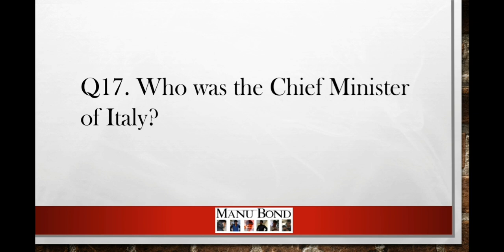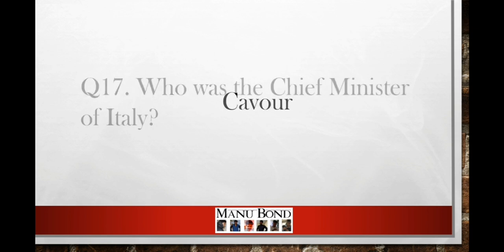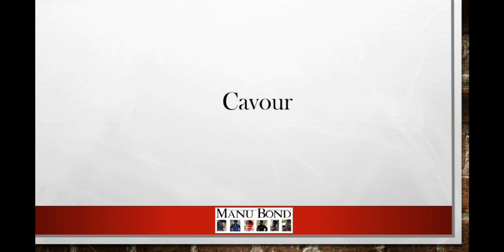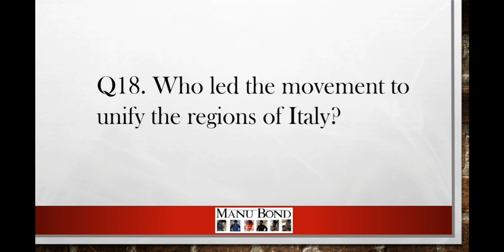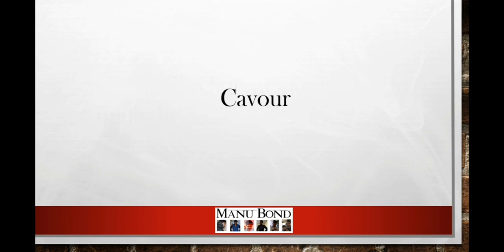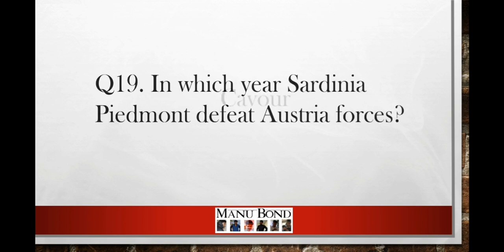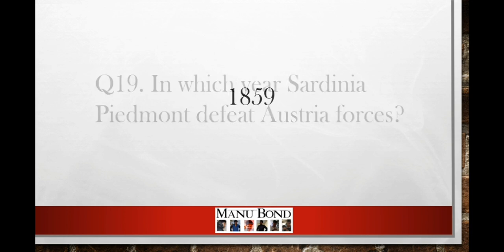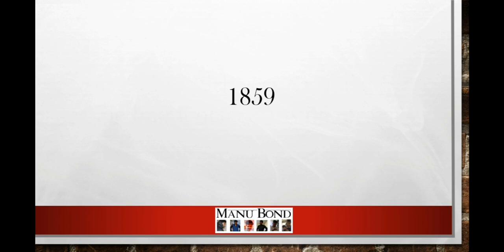Question number 17: Who was the Chief Minister of Italy? Answer: Cavour. Question number 18: Who led the movement to unify the regions of Italy? Answer: Cavour. Question number 19: In which year did Sardinia-Piedmont defeat Austria? Answer: 1859.